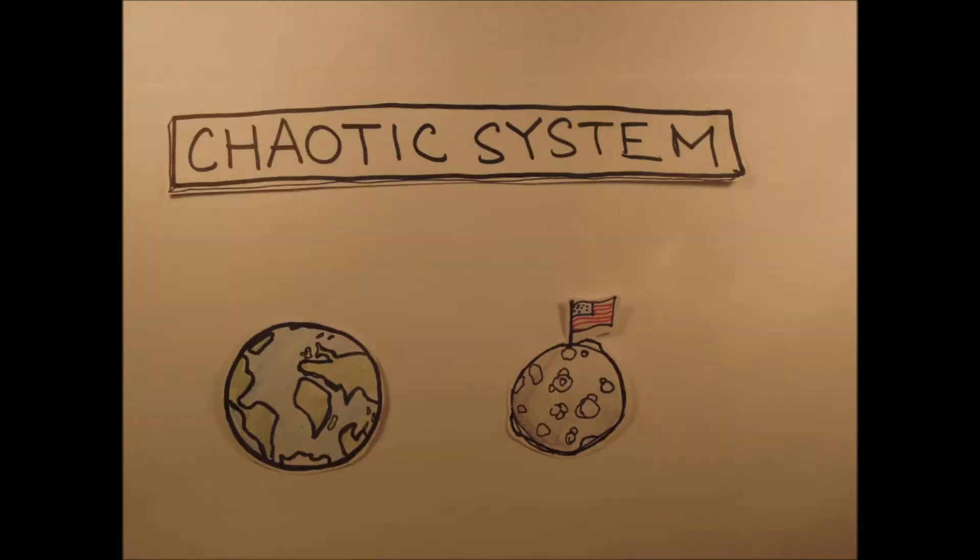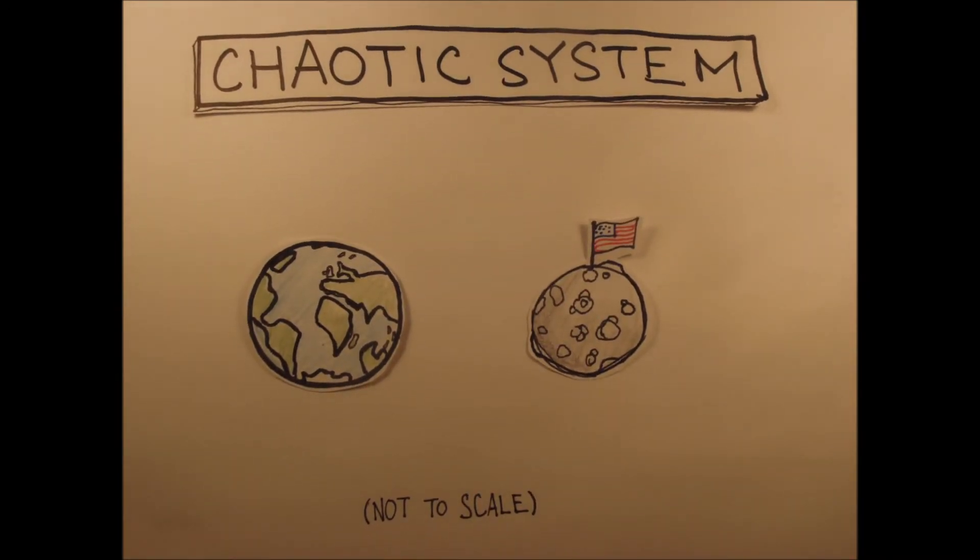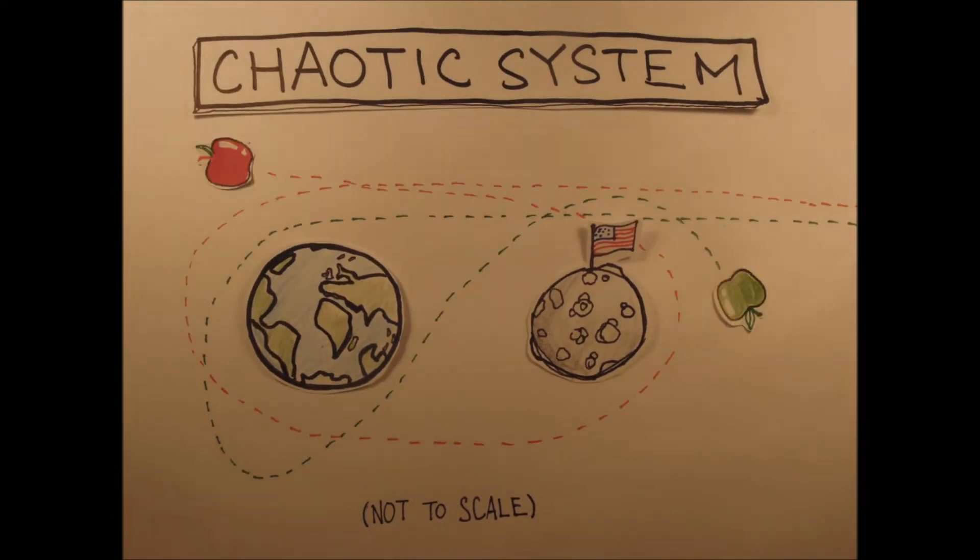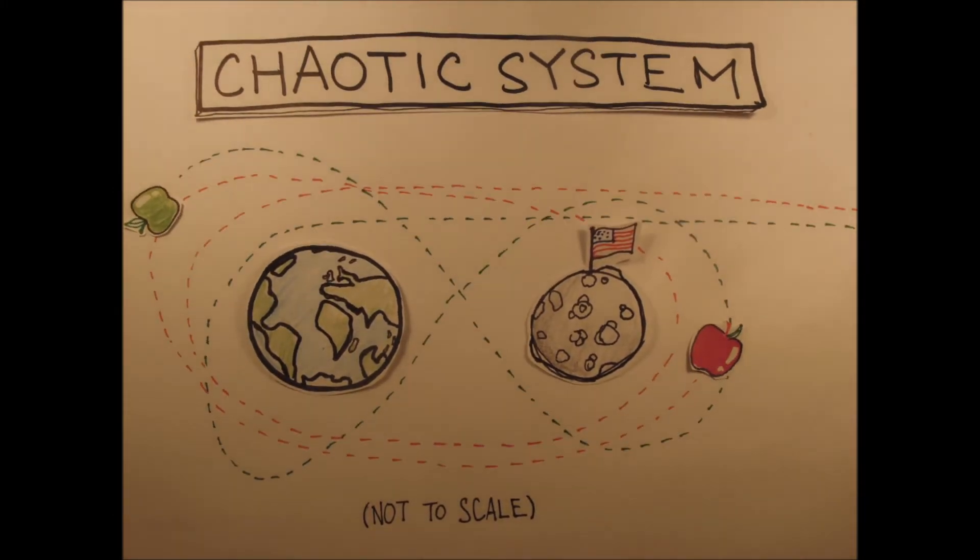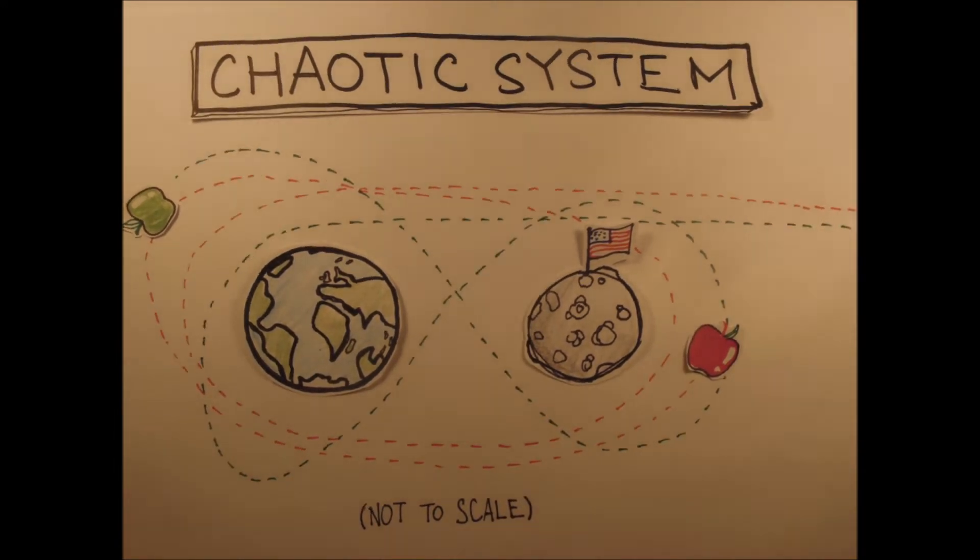To turn this into a chaotic system, all we need to do is add in an extra gravitational body, say the moon. This is called the three body problem, and what we see is that even though the two apples start off really close to each other, they end up diverging at some point and heading in completely different directions.